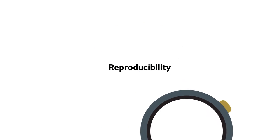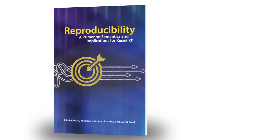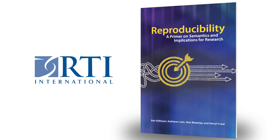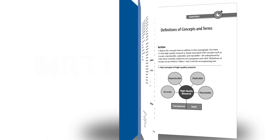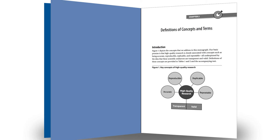To clarify matters and bring you up to speed on this critical topic is a new book from RTI International called Reproducibility, a primer on semantics and implications for research. It offers readers a comprehensive set of definitions related to reproducibility and a guide to thinking about these ideas.